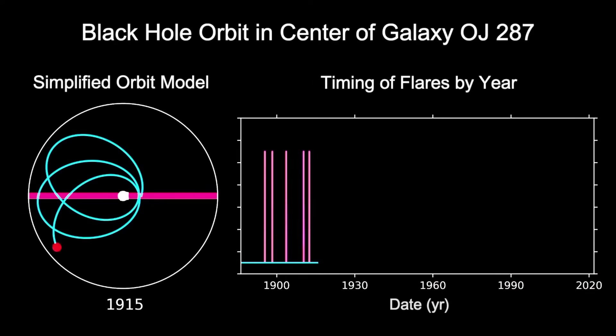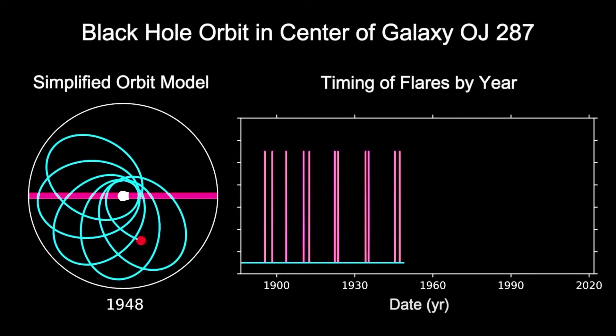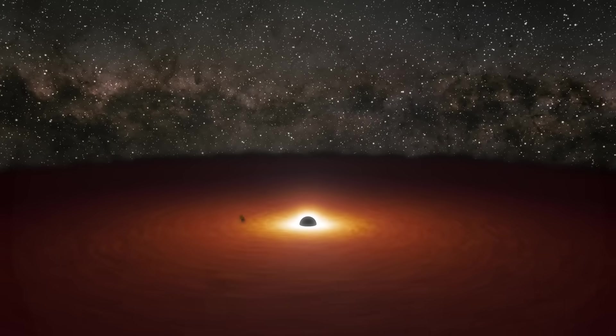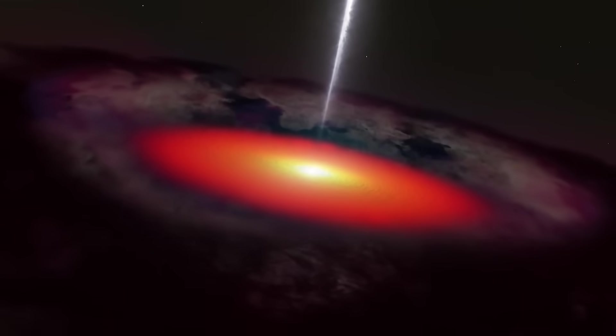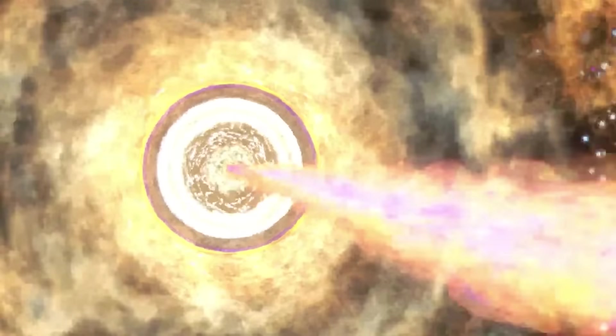Once every six years, the smaller black hole crashes through the accretion disk of the larger hole and creates a flash of light with the luminosity of one trillion stars. But most of these jets happen due to the magnetic fields funneling material at relativistic speeds from the main black hole's poles.